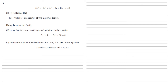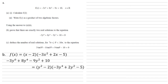Using the answer we've just found, we're going to prove that there are exactly two real solutions to the equation minus 3y to the power of 6 plus 8y to the power of 4 minus 9y squared plus 10 equals 0. As this equation is the same form as f(x) with x replaced by y squared, we can write it as (y squared minus 2) times (minus 3y to the 4 plus 2y squared minus 5).